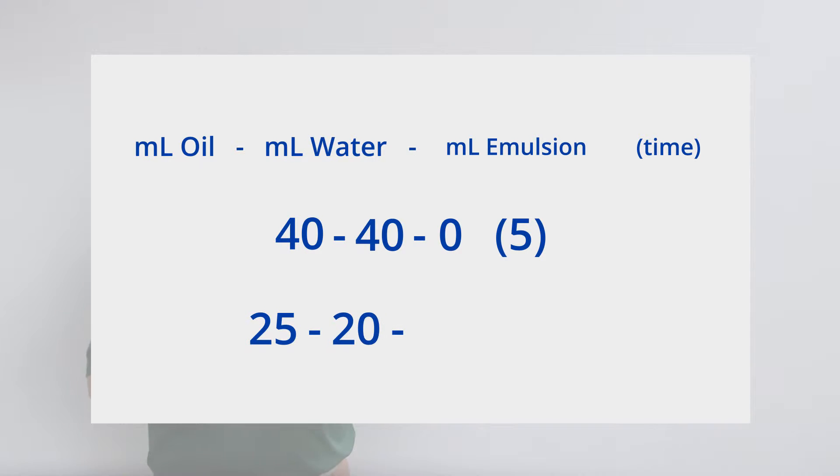25, 20, 35, and greater than 30. This would mean that the mixture was left to separate for 30 minutes, but there was 25 milliliters of oil, 20 milliliters of water, and 35 milliliters of emulsion. This would be considered a stable emulsion and bad emulsibility.